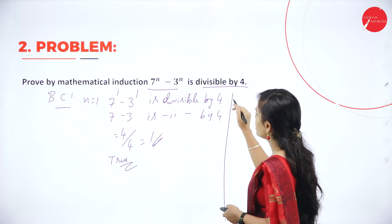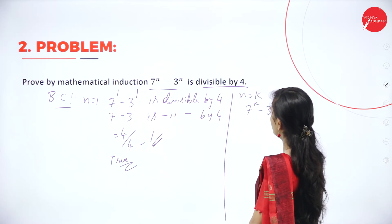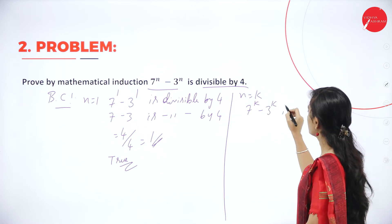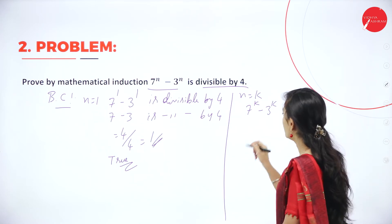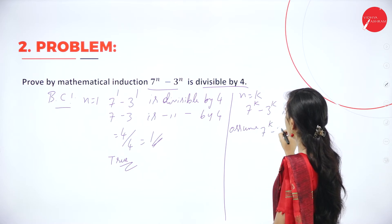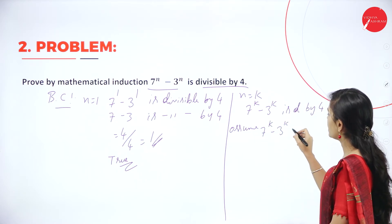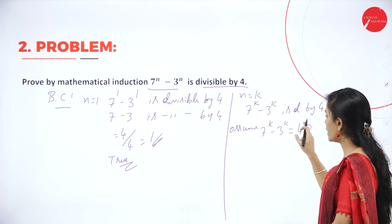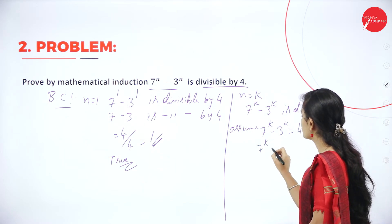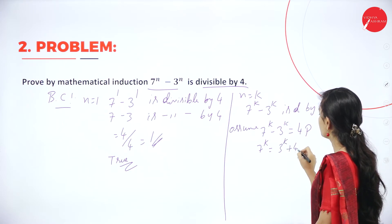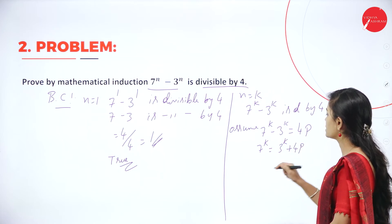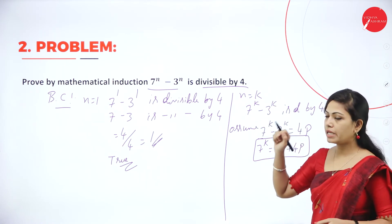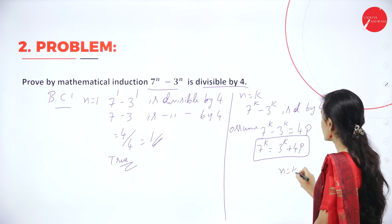In the next step n equal to k: we get 7 power k minus 3 power k, and we have to prove this is divisible by 4. I assume 7 power k minus 3 power k equals 4p. From this, 7 power k equals 3 power k plus 4p — we will use this later. So n equal to k is true.